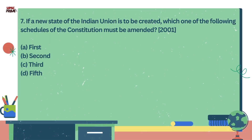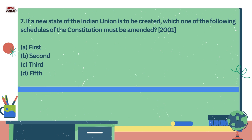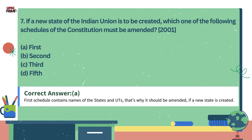Question number 7. If a new state to the Indian Union is to be created, which one of the following schedules of the Indian Constitution must be amended? Option A: First Schedule. Option B: Second Schedule. Option C: Third Schedule. Option D: Fifth Schedule. The correct answer is the First Schedule, which contains the names of states and union territories. That's why it should be amended if a new state is created.